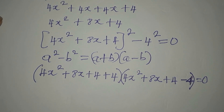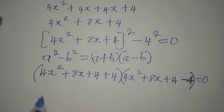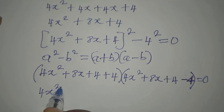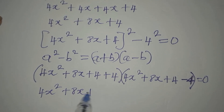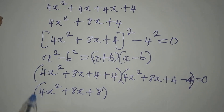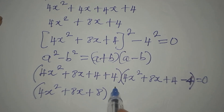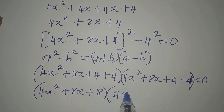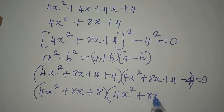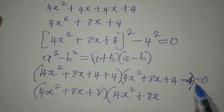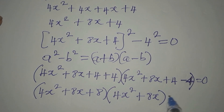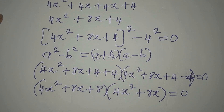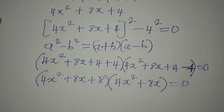Continuing, the first bracket becomes 4x² + 8x + 8. In the second bracket we have 4x² + 8x, and the 4 - 4 cancels to zero. So we close both brackets and equate to zero.